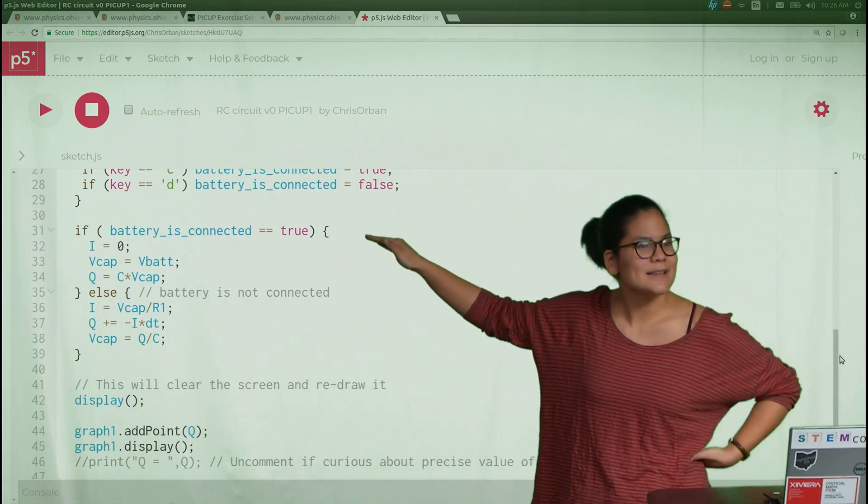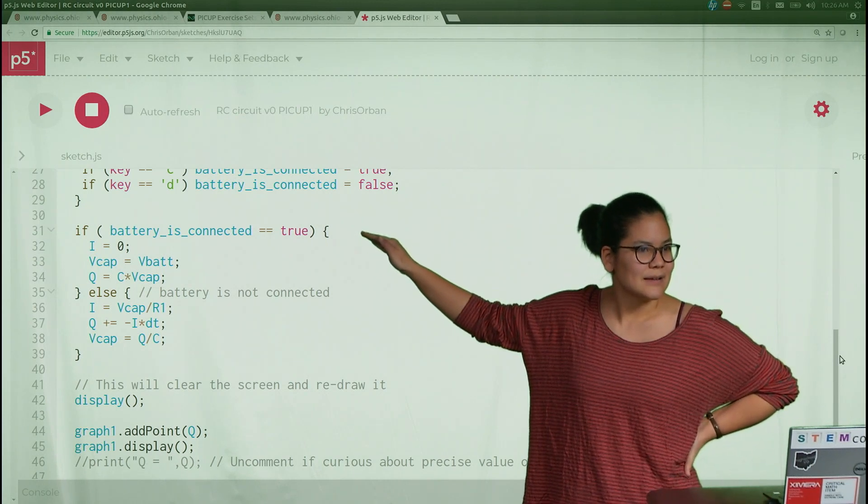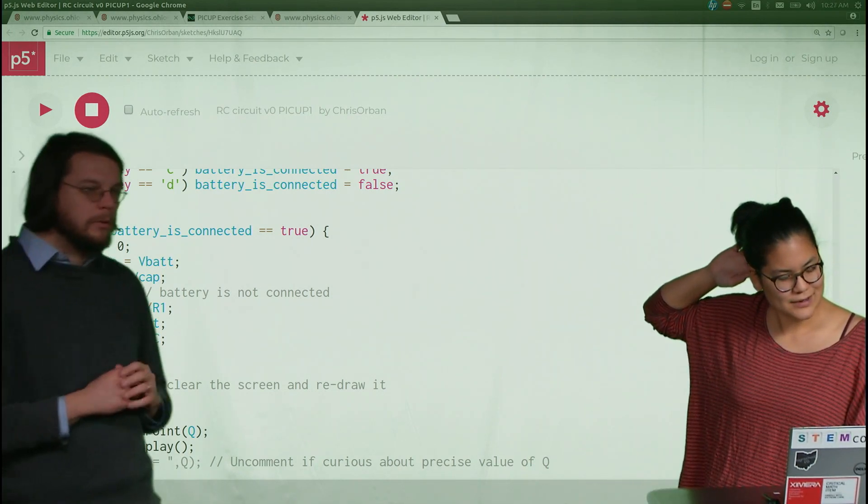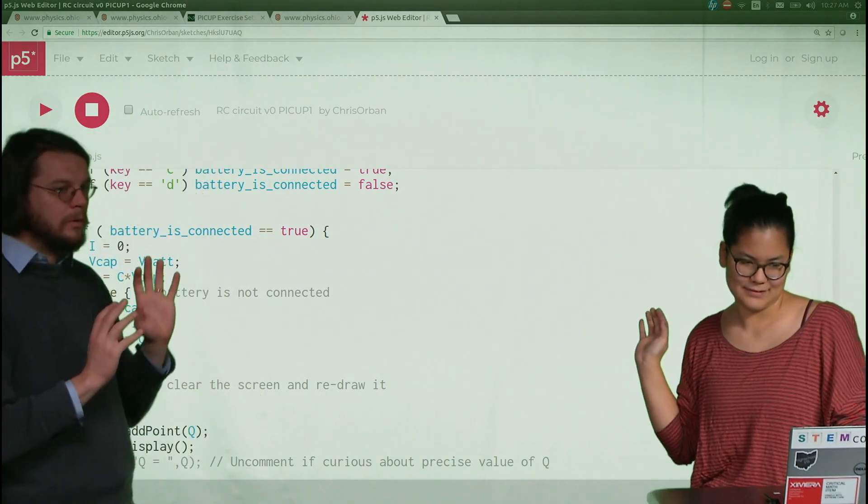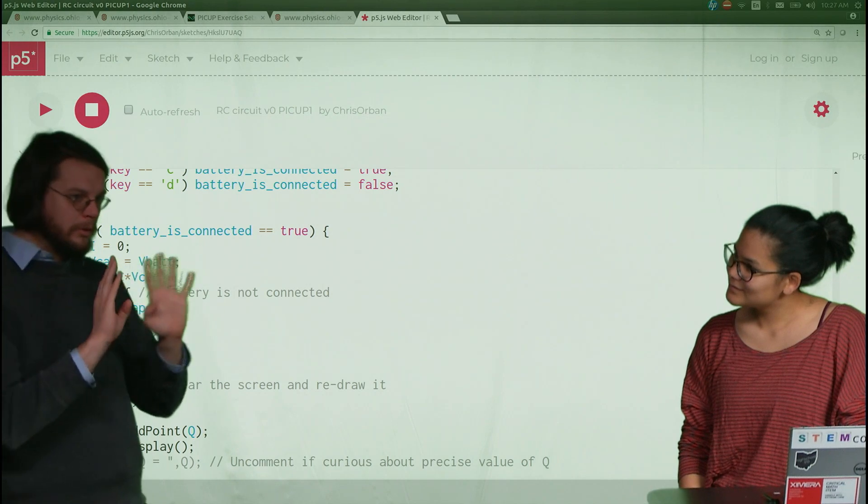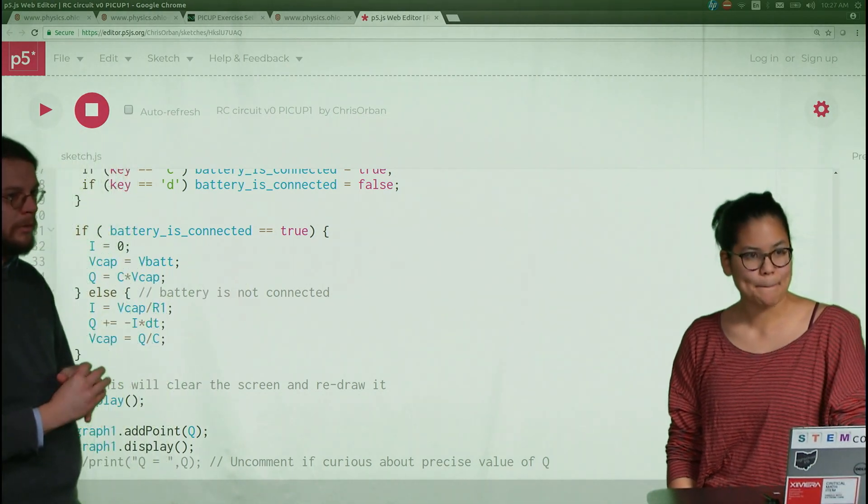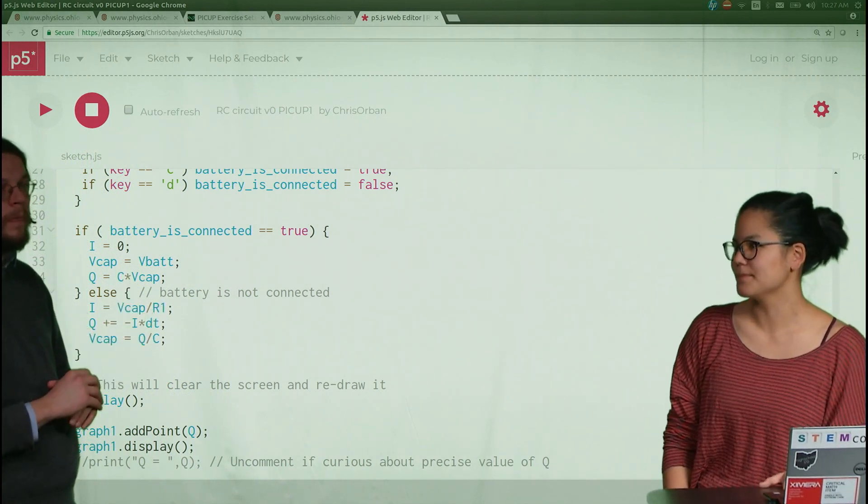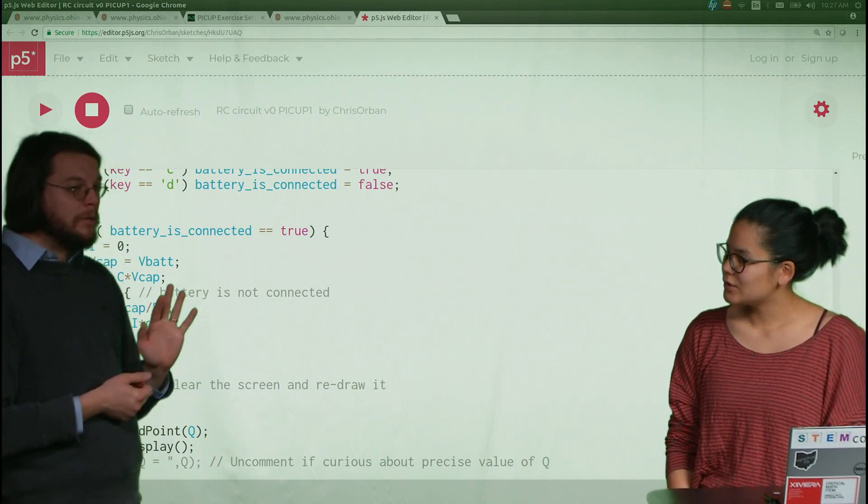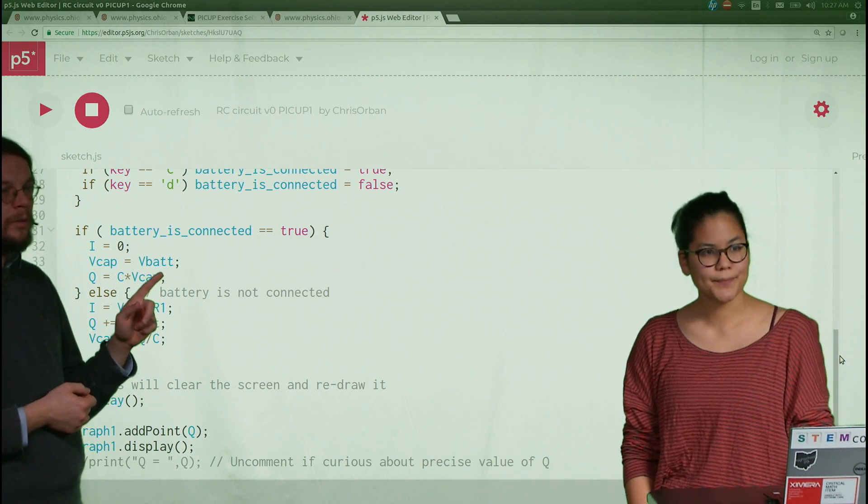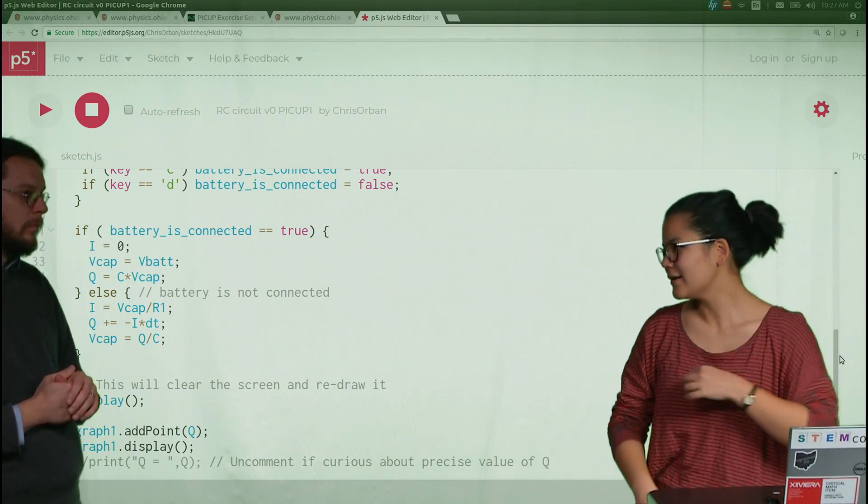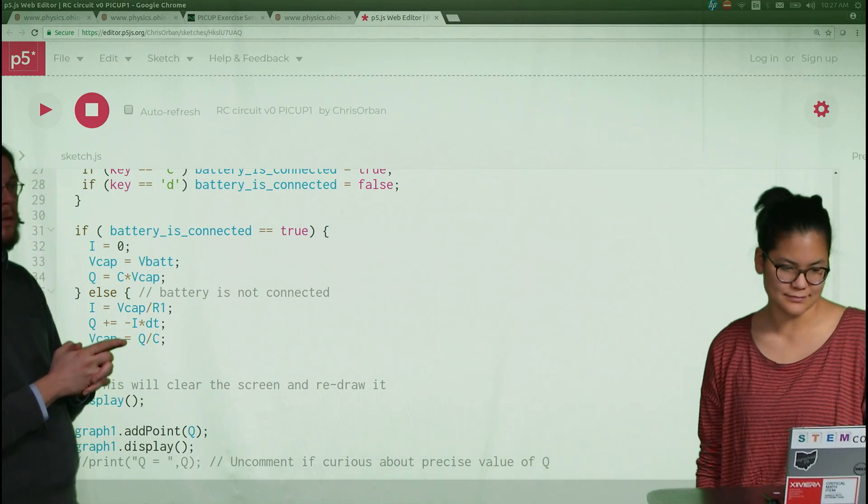It looks like when we're entering this draw function, we are determining if one of these keys has been pressed, the C or the D, and therefore switching this variable to true or false based on that. So that's how we can toggle this different state of our circuit. If the battery is connected, battery connected means the battery is connected to the capacitor. So all you have is a battery and a capacitor.